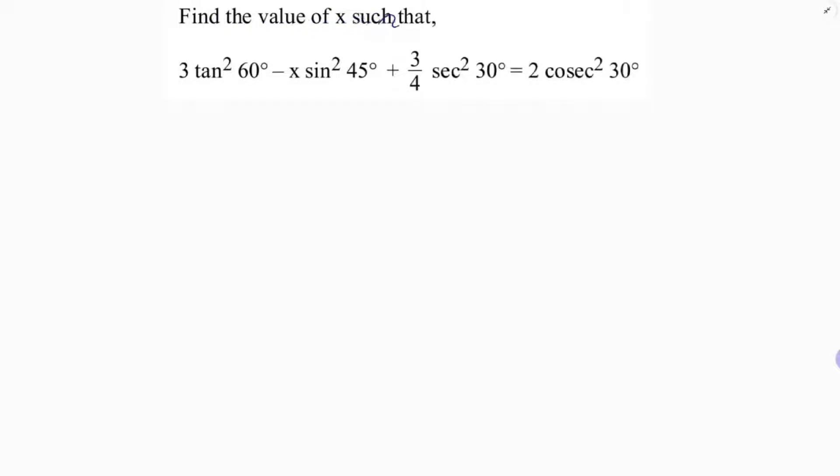Find the value of x such that 3 tan² 60° - x sin² 45° + 3/4 sec² 30° = 2 cosec² 30°.